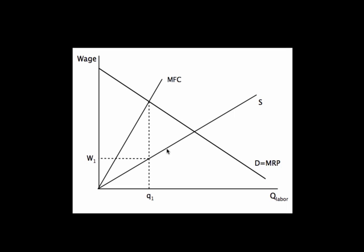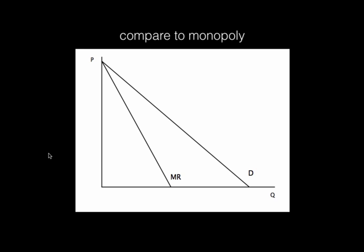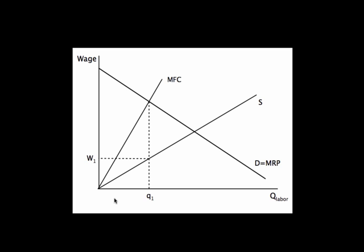Unlike the perfectly competitive case, if I want to hire one more worker I have to raise the wage to attract that next worker because of the upward-sloping supply — people only increase quantity supplied of labor if the wage is higher. If I'm a single-wage firm paying the same wage to all workers, raising the wage to hire one more worker means raising the wage for everyone. That's why the marginal factor cost is above the wage.